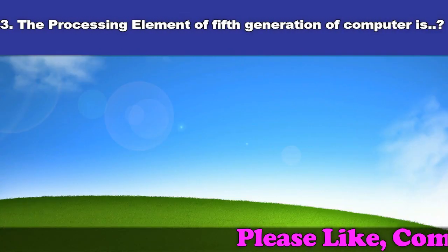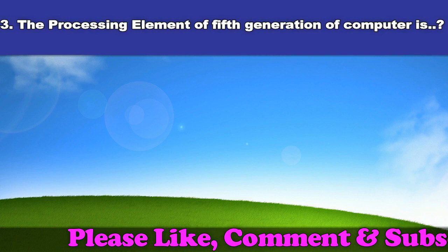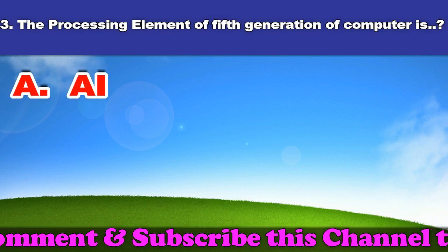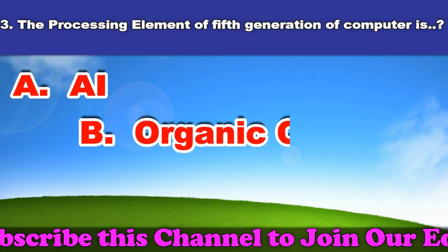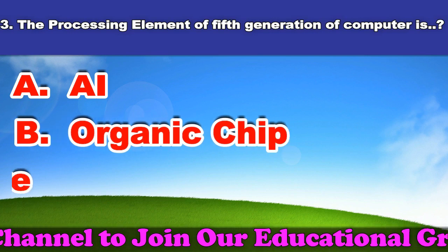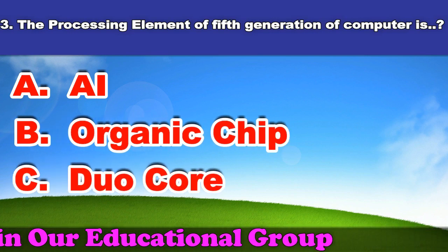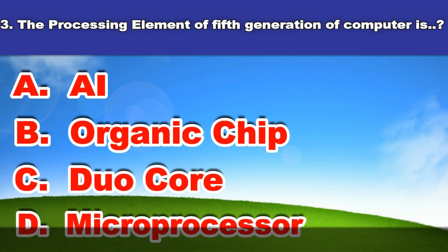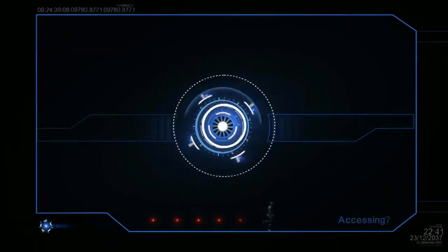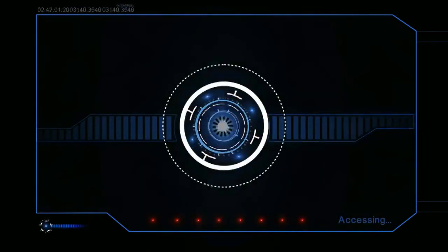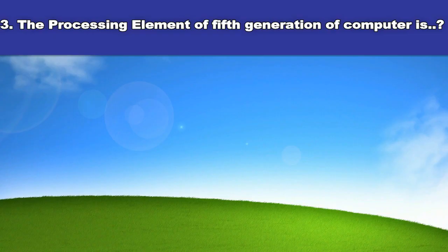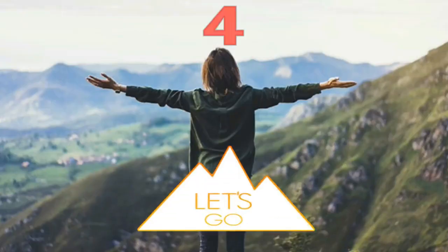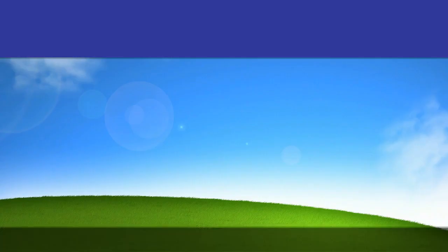Third question: The processing element of the fifth generation of computer is. A. AI. B. Organic chip. C. Duo core. D. Microprocessor. And the answer is organic chip.